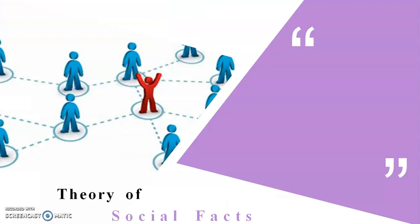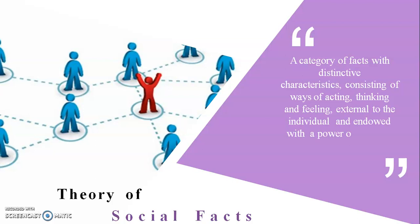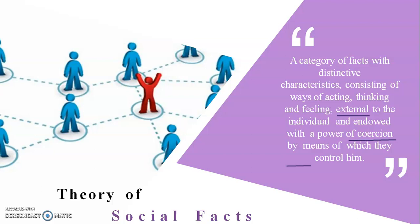Theory of Social Facts: Social facts means a category of facts with distinctive characteristics, consisting of ways of acting, thinking, and feeling external to the individual, and endowed with the power of coercion by which they control him. 'External' here refers to the society — the community, people, culture, values, and beliefs. Coercion and control refers to the norms, rules, and regulations that exist in society.